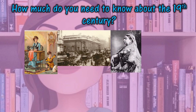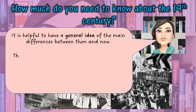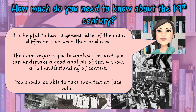So bearing in mind you will be looking at a 19th century text in this exam paper, how much do you need to know about the 19th century? Well, don't worry about this too much. Although it's helpful to have a general idea of the main differences between then and now, the exam requires you to analyse text, and you can undertake a good analysis of text without a full understanding of context. If you can analyse text, it doesn't matter when it's from, because you are looking at how you interpret the text, what is suggested and implied, and your reaction to that text. So you should be able to take each text at face value. Maybe brush up on some general knowledge and think about what was happening at that time versus what is happening now and within the 20th century.